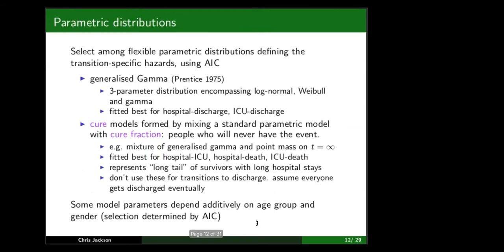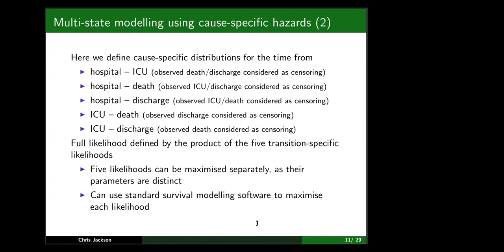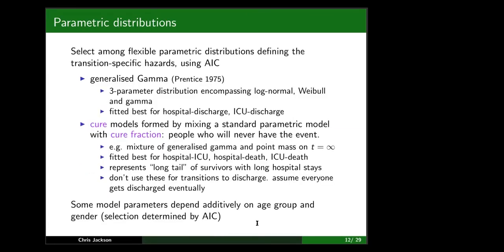Beyond estimating the hazards, we also want to calculate probabilities and predicted times to events. For parametric distribution selection, we used AIC to choose between different parametric functions. We used flexible models — the generalized gamma, a three-parameter distribution encompassing the Weibull and gamma — which fitted best for transitions from hospital or ICU to discharge.